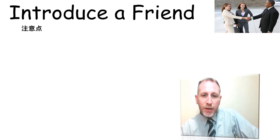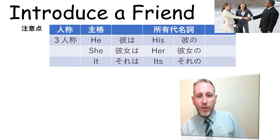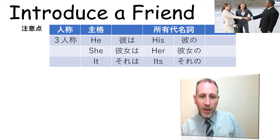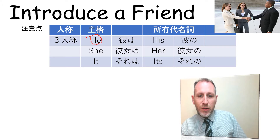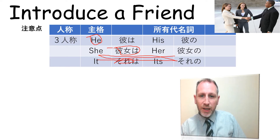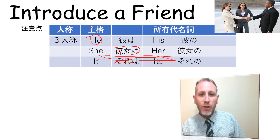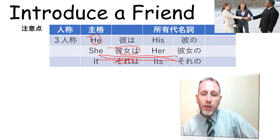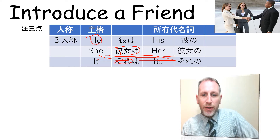When you're introducing a friend, you use these words. If it's at the top of the sentence — like 'he is happy' or 'he is tall' — use 'he,' which is 'kare wa' in Japanese. 'Kanojo wa' in English is, of course, 'she.' And for possession, 'shoyu daimeishi' is 'his' — 'kare no' — or 'her' — 'kanojo no.' We can use these words when describing a friend after we've introduced their name.